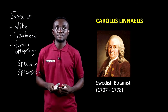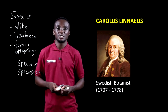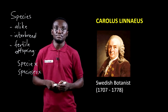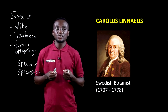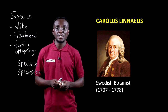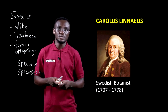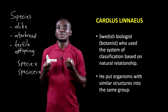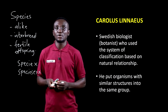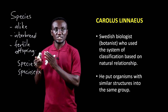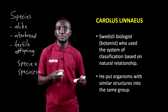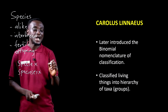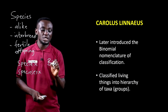Next is Carolus Linnaeus, who is a Swedish botanist. He lived between the years 1707 and 1778 — he was 71. He played a very key, immense role in biological classification. In fact, his form of classification is what we still use in present times. He used a system based on the natural relationship that existed between living organisms, putting organisms with similar structures into the same groups and those with different structures into different groups. He later introduced the concept we refer to as binomial nomenclature.